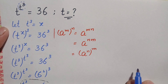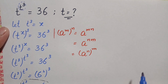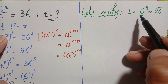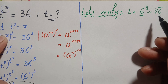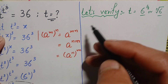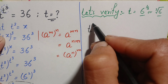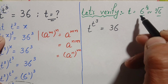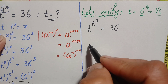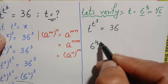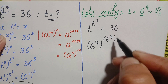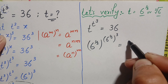Now we will verify the value of t. We check whether t equals the cube root of 6, or 6 raised to power 1 over 3, is the exact and correct value of t. We read our problem again: t raised to power t cubed equals 36. We replace t with 6 raised to power 1 over 3, so this becomes 6 raised to power 1 over 3, all raised to the power of 6 raised to power 1 over 3, raised to power 3, equal to 36.